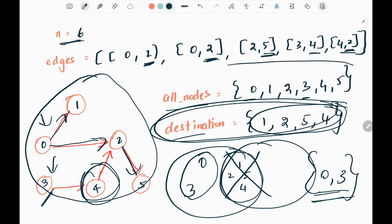If I avoid, I would be getting the nodes that don't have an incoming edge. Zero and three doesn't have an incoming edge. Zero and three have not been in a situation as a destination node.